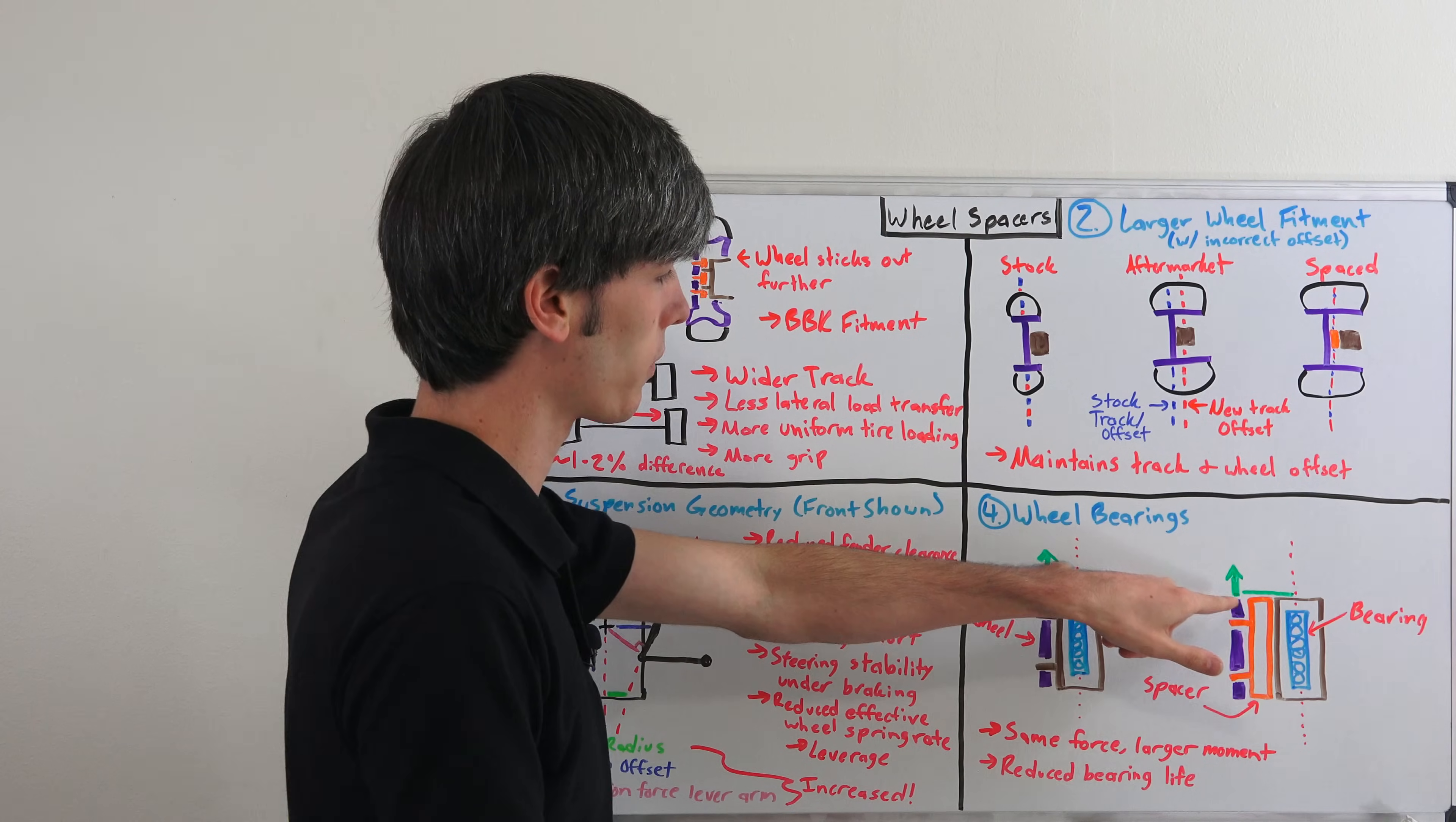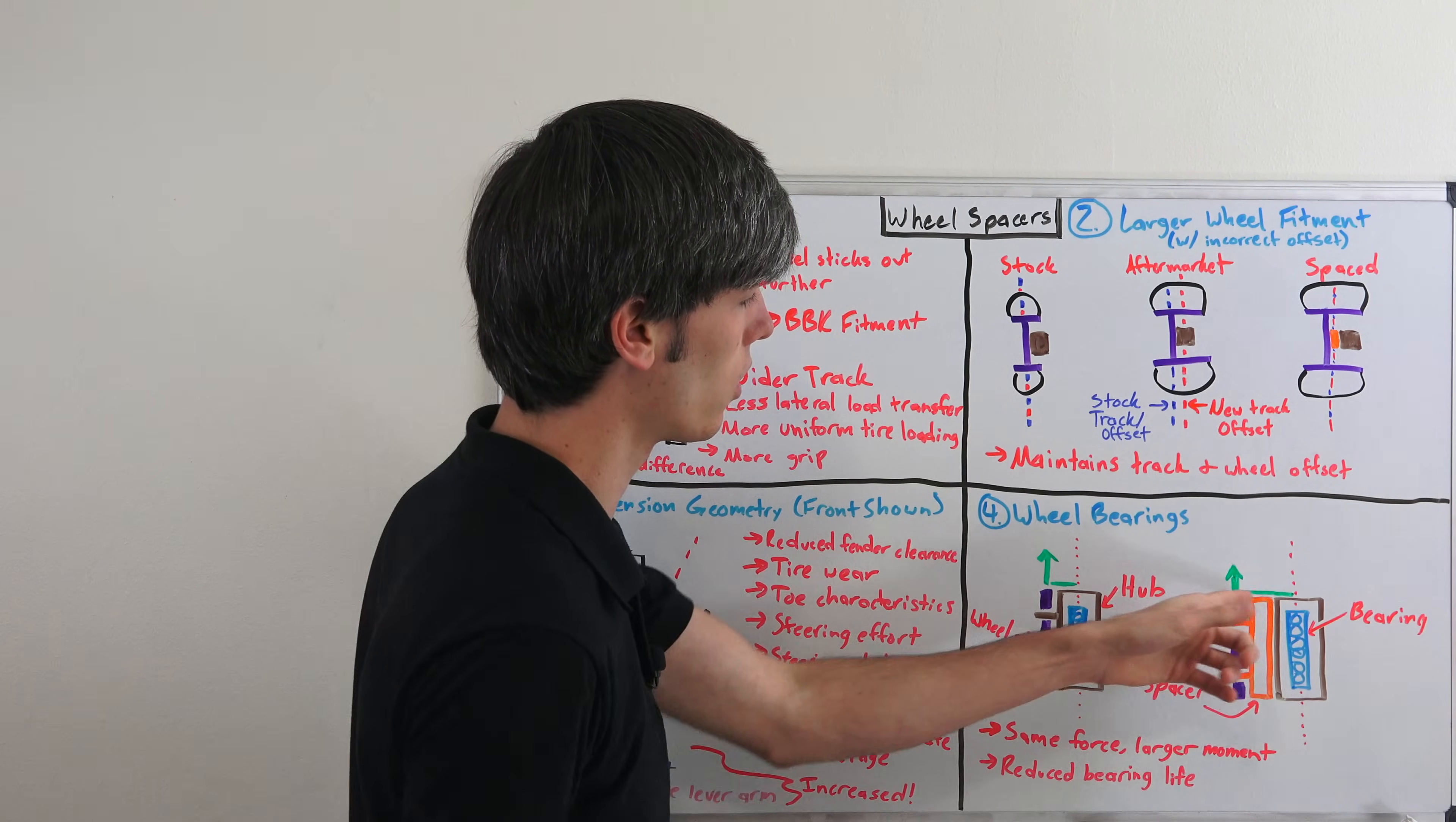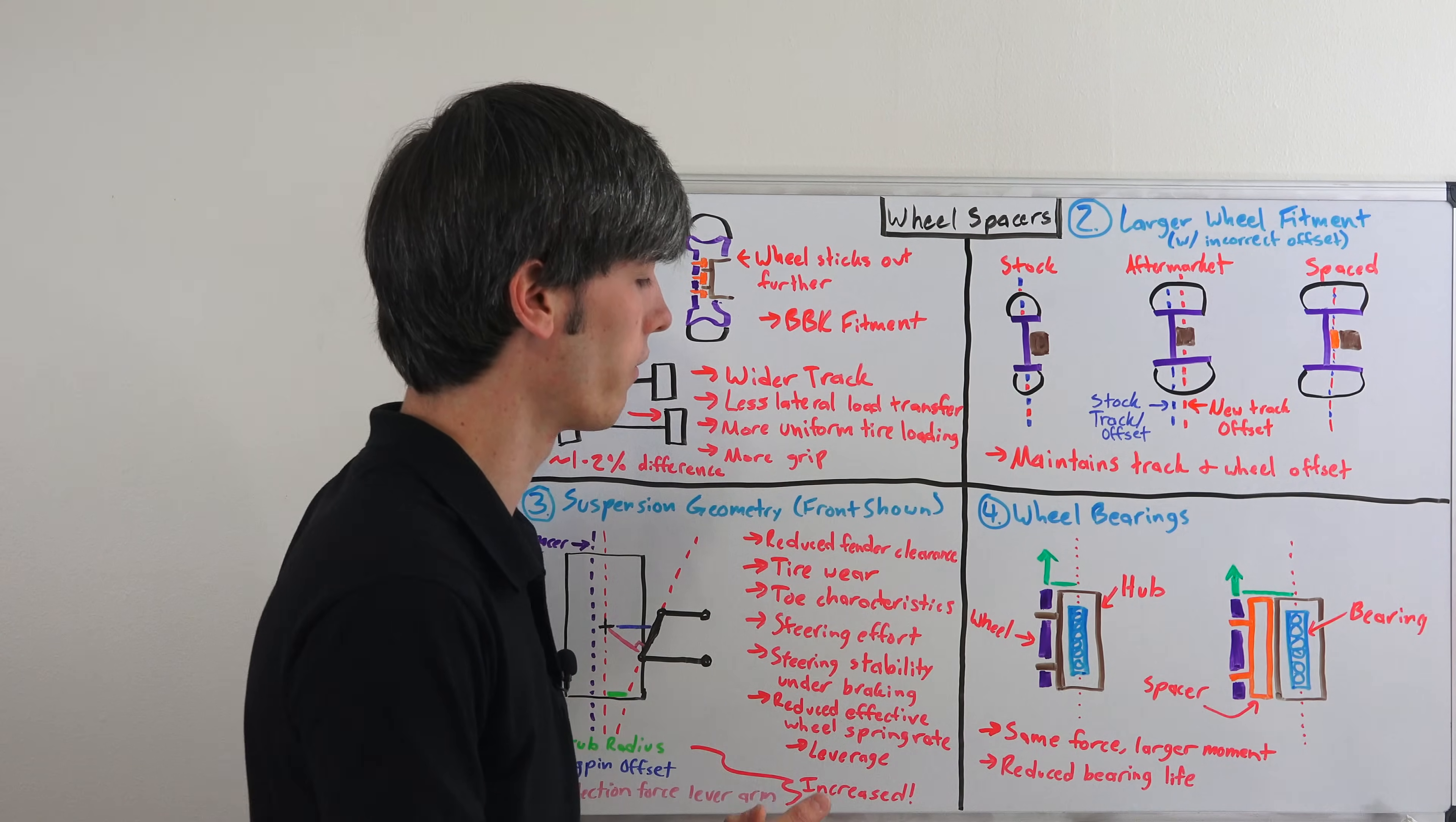So the loading characteristics are going to be different. Whereas it was designed for these loading characteristics. Now you've increased that load and it's going to be at a different angle and a larger distance. So you've increased the moment and you're going to have different loading on that bearing. And that can reduce the life of that wheel bearing.